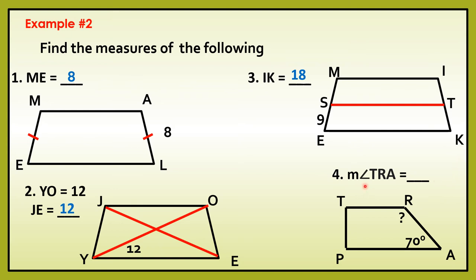Number 4, what is the measure of angle TRA? Since ang measure ng angle A natin ay 70, ano ang magiging measure ng angle TRA? Palaging tandaan sa trapezoid natin, consecutive angles are supplementary. Kung supplementary sila, ang measure ng dalawang angle na magkasunod or consecutive is 180 degrees. Since meron na tayo ditong 70, imaminus lang natin sa 180, yun ang magiging angle TRA natin. And the measure of angle TRA is 110. Kapag kinuha natin ang sum ng 110 at 70, that is equal to 180 degrees.